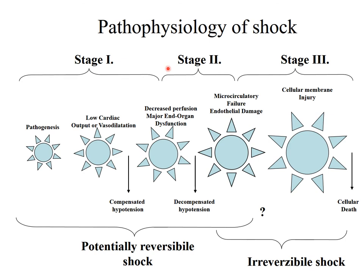Based on pathophysiologic events, the stages are: first, perfusion is altered due to low cardiac output or vasodilation — this can be compensated. Decreased perfusion leads to major organ dysfunction, still potentially reversible. Then the patient develops the decompensated stage. When microcirculatory failure and endothelial damage occur, this initiates the irreversible phase. When cellular membrane injury and cell death happen, it becomes completely irreversible shock.